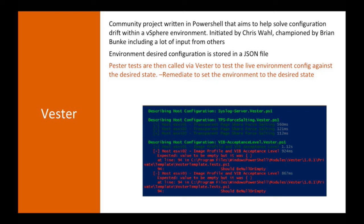Vesta calls Pester tests which run against the live environment and compare it against the configuration file. For example, in your configuration file you might say DRS should be on for a cluster — when you run Vesta, it'll flag that DRS is off in that cluster, telling you that you've drifted from your desired configuration. If you run it with the dash remediate flag, it will go ahead and fix that and put the environment back to your desired state. This has great use cases for production environments, home labs, and work labs where lots of people are making changes — you can just run Vesta with the remediate flag each night to reset everything back to the desired state defined in the JSON file.